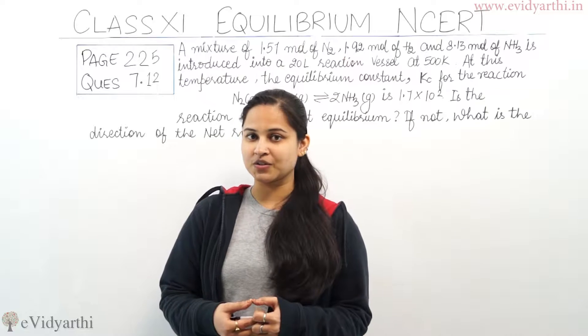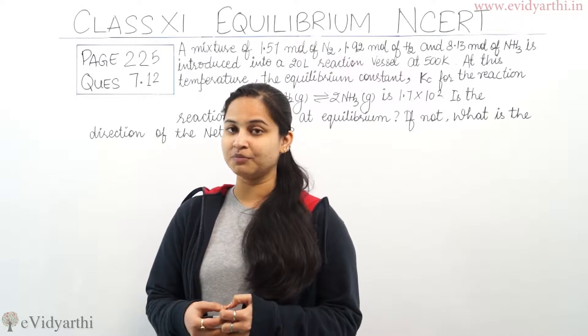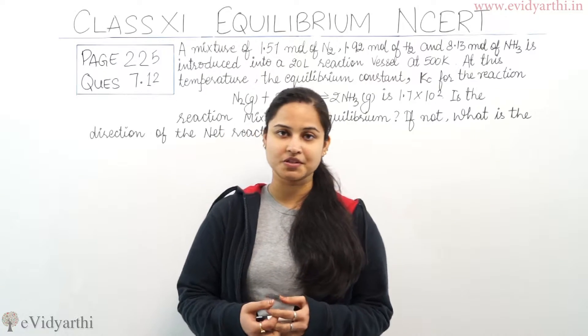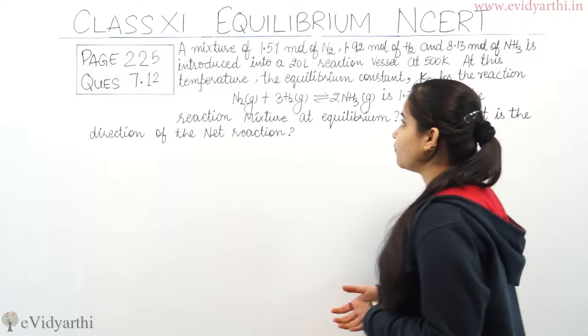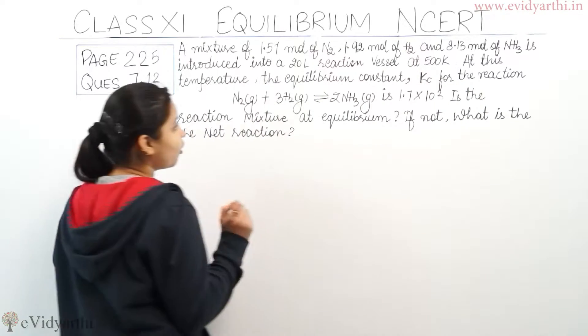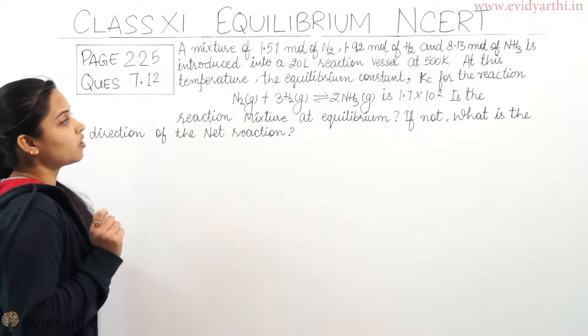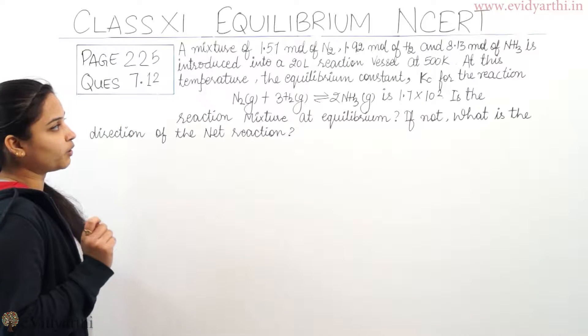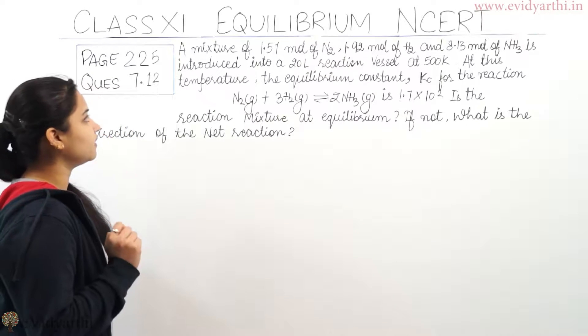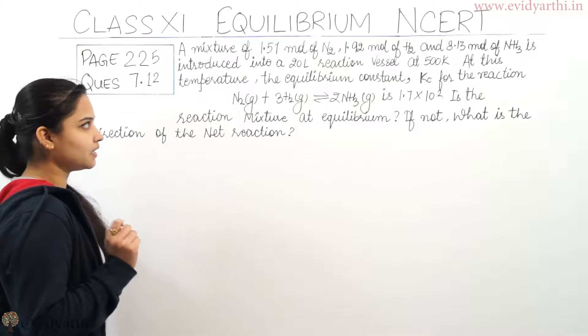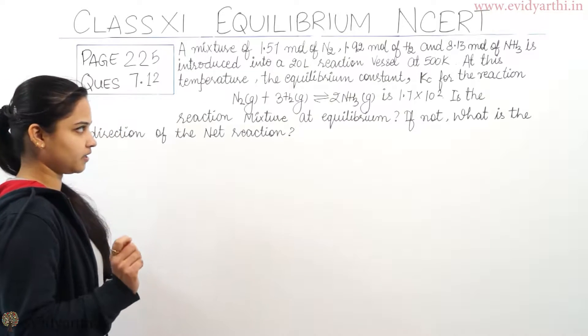Let's see what the question is all about and then we'll look forward for the solutions. The question is, a mixture of 1.57 mol of nitrogen, 1.92 mol of hydrogen and 8.13 mol of ammonia is introduced in a 20 litre reaction vessel at 500 Kelvin.